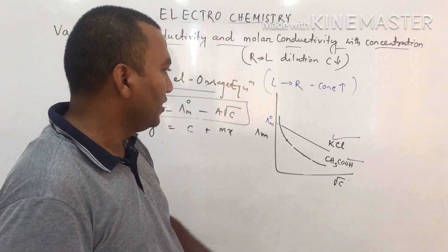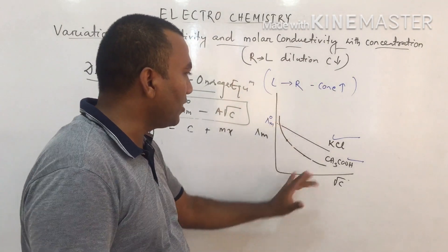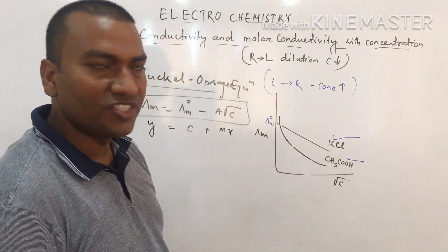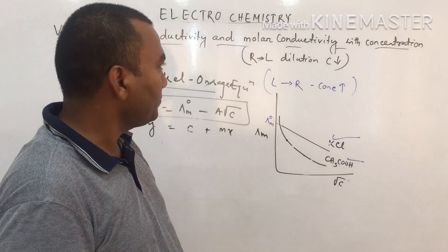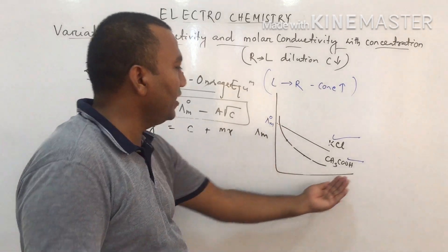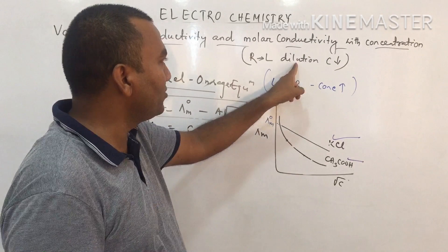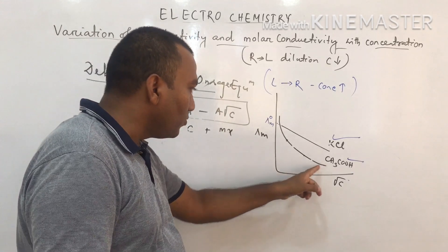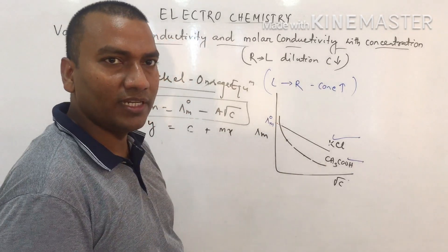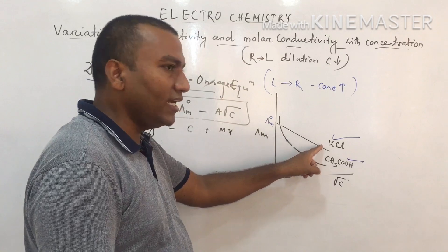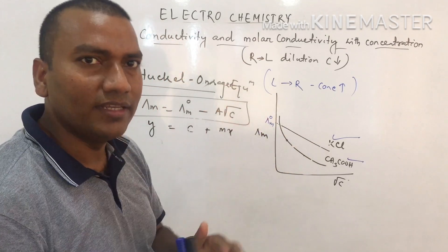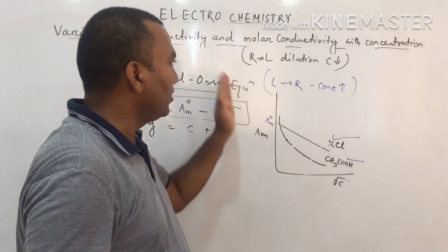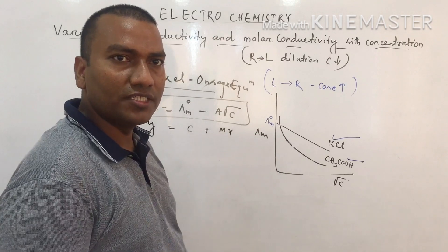In exams, a graph is given with electrolytes labeled AB instead of KCl or acetic acid, and you must identify which is strong or weak. Another question type: explain why, when dilution increases, strong electrolyte λm increases slowly while weak electrolyte increases sharply. Answer: for strong electrolytes, interionic attraction reduces ionic mobility.